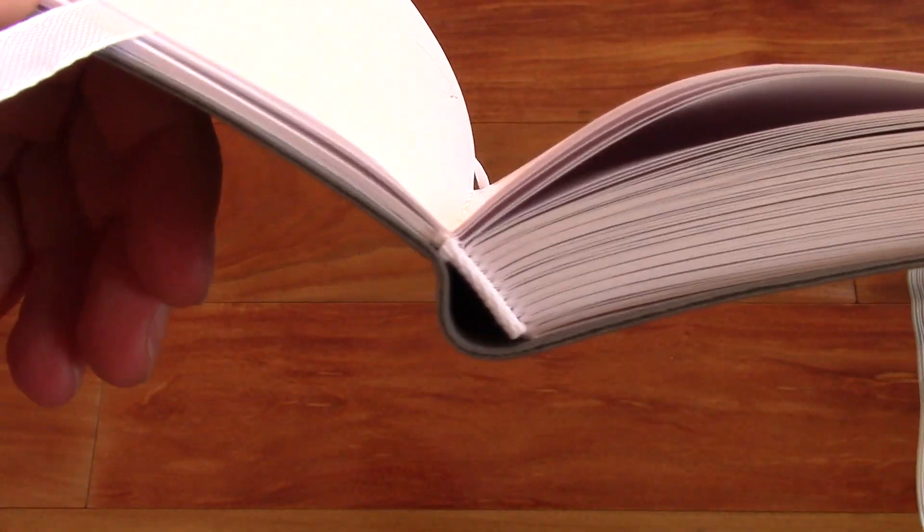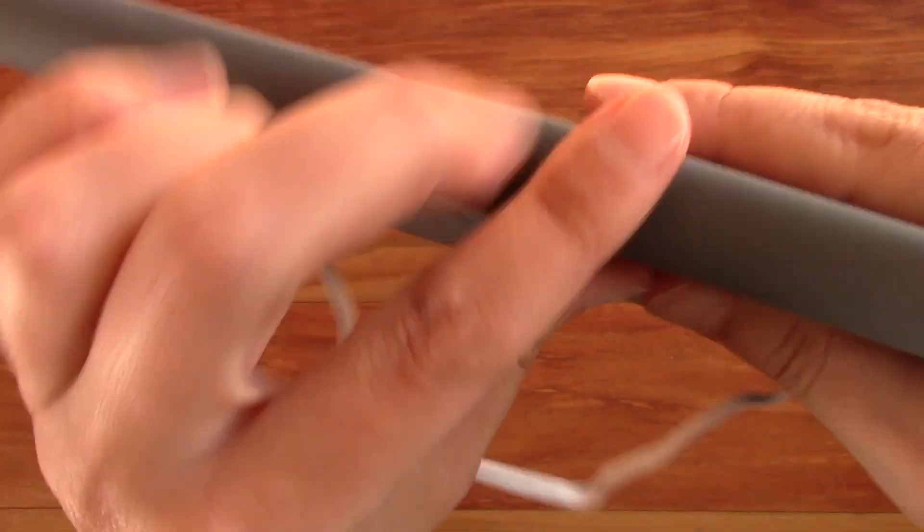And the paper feels really nice. It does feel like a nice quality. As I said, it's pretty white. Here you can see the stitching. It's nicely done too. So the whole notebook is stitched and bound.